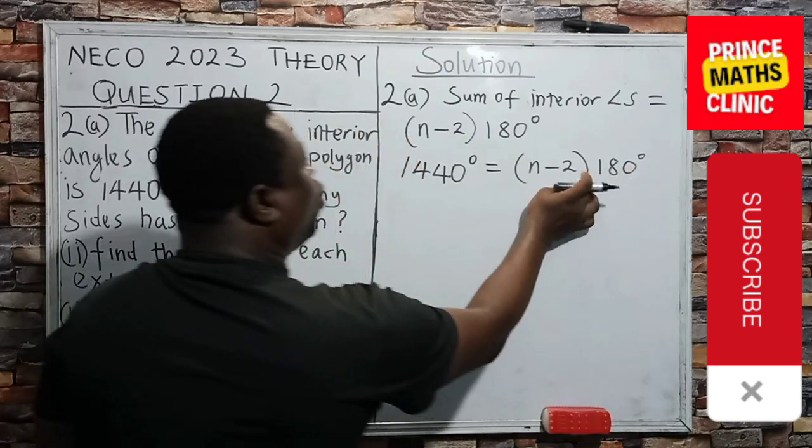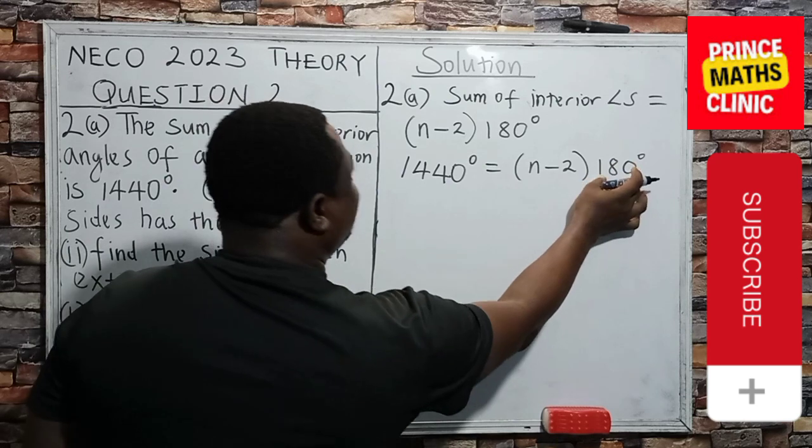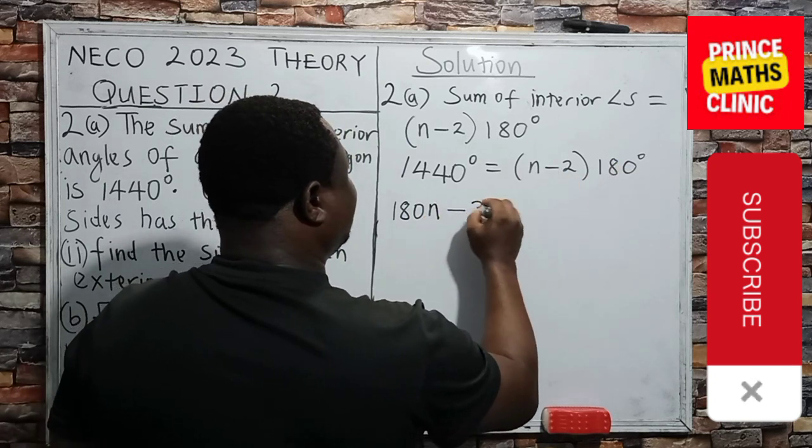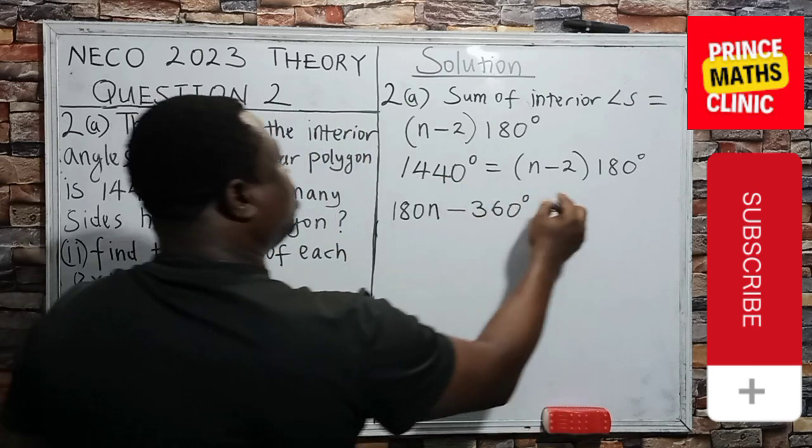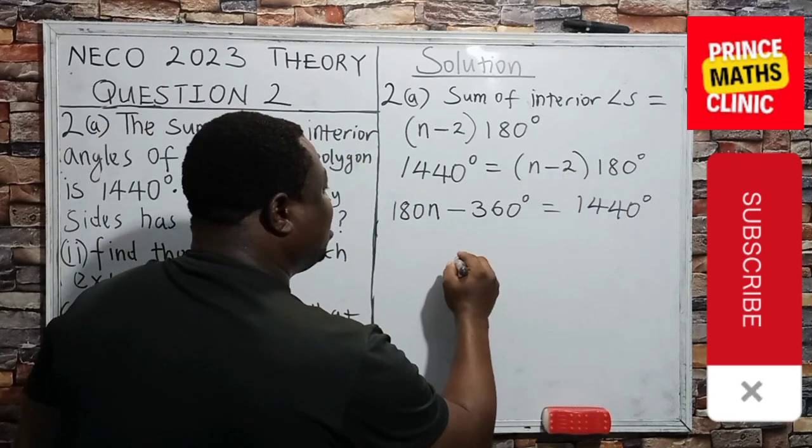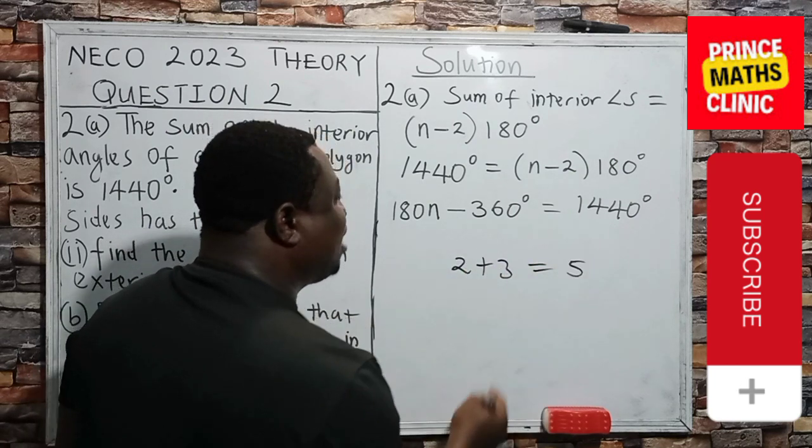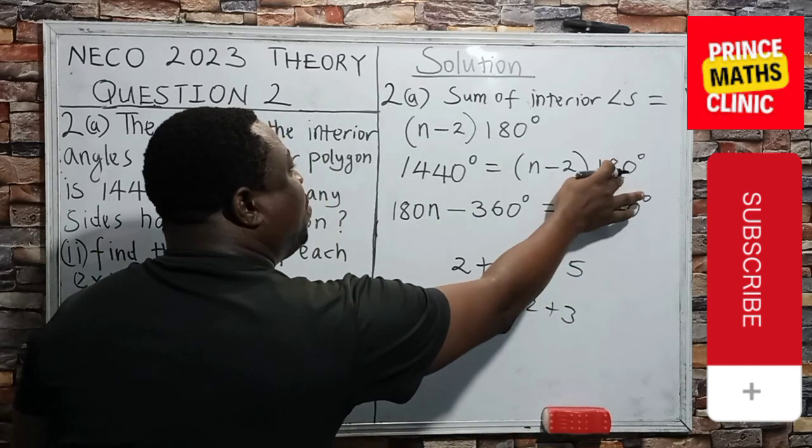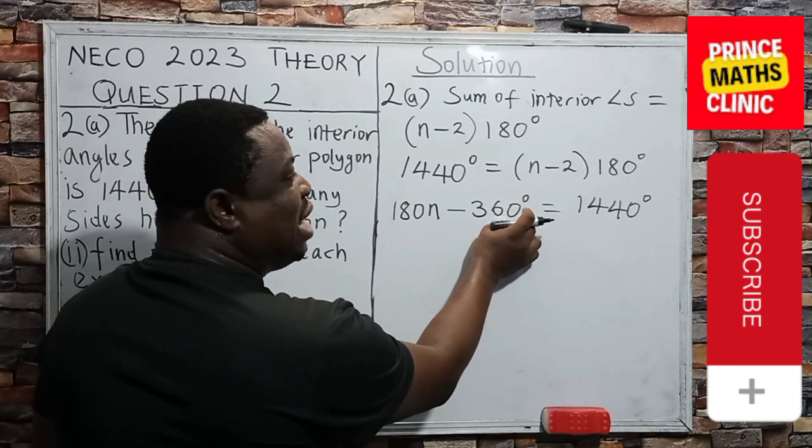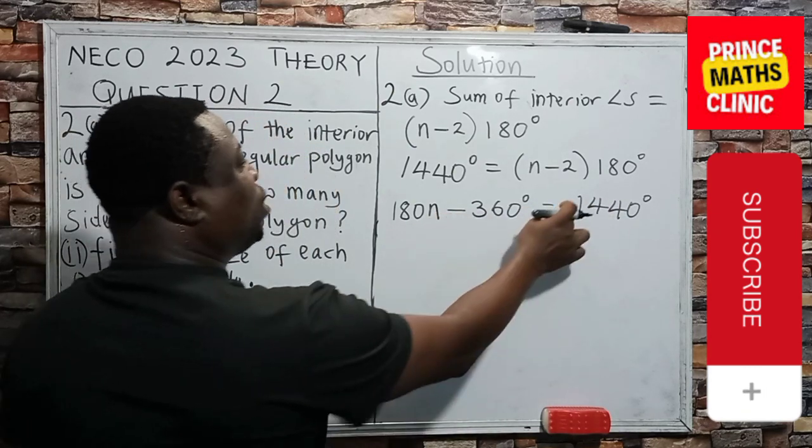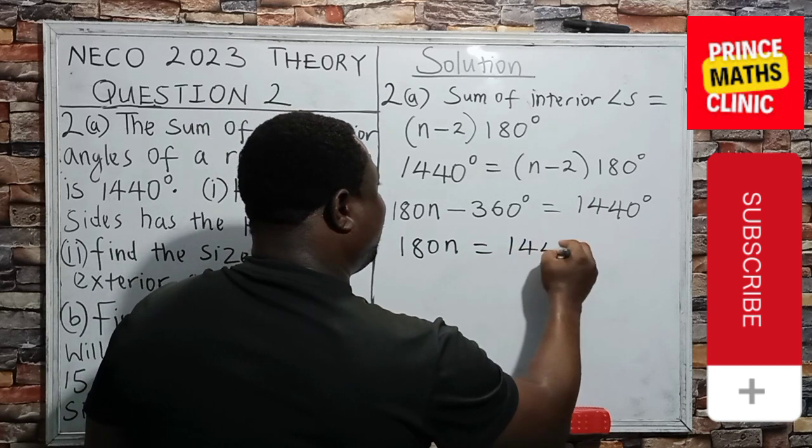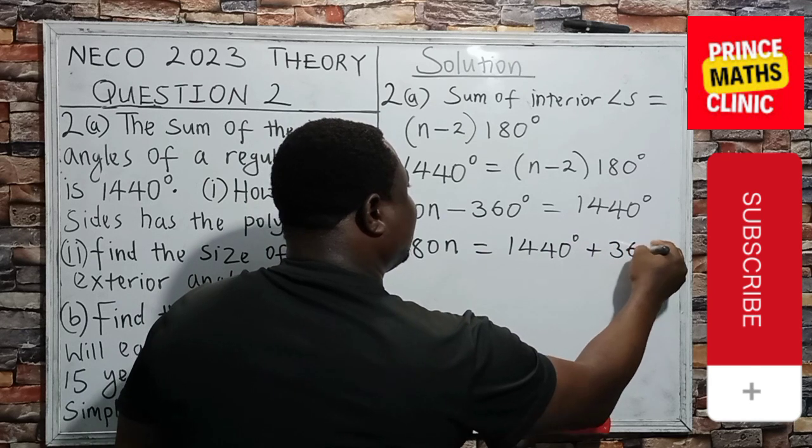Then I'll use this 180 to expand or open this bracket. 180 times N is 180N. 180 times minus 2 is minus 360 degrees, equal to this 1,440 degrees. What I've done here is like saying 2 plus 3 equals 5. I'm later telling you that 5 is 2 plus 3. At this point I will collect like terms. There is an N here. Then there is no N here. So I'll move this here. And once it crosses this equal to sign, it changes to positive. So 180N is equal to 1440 degrees plus 360 degrees.